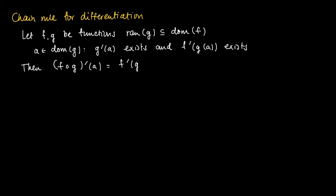So the composite function f through g evaluated, the derivative evaluated in a exists, and we may calculate it as a product of the respective derivatives.